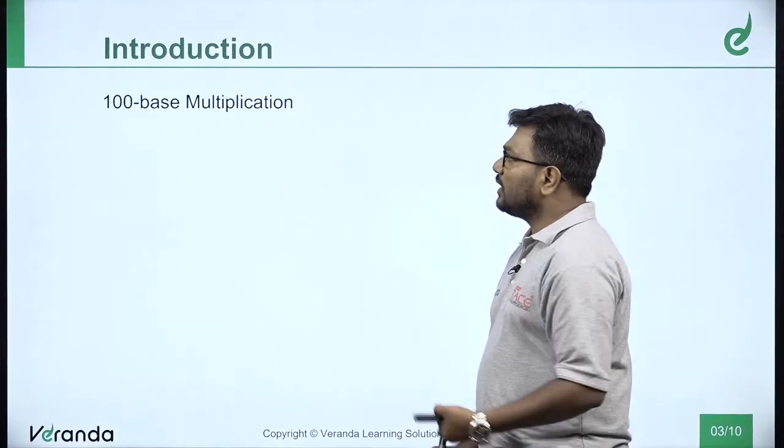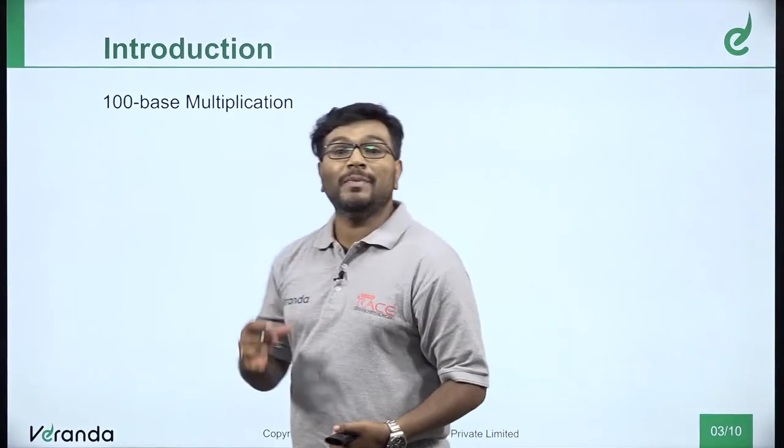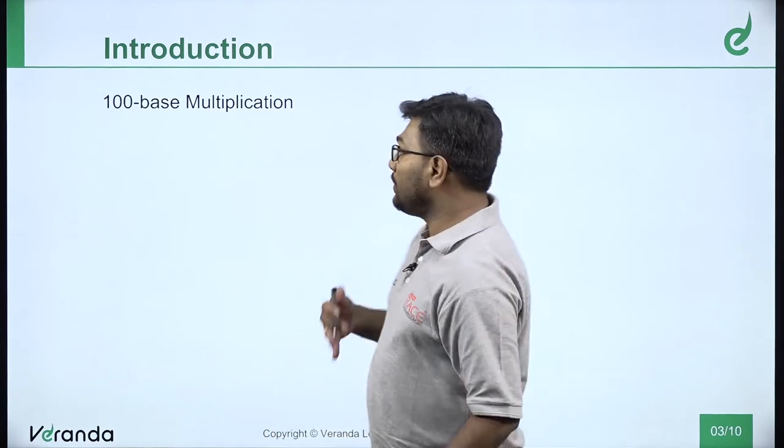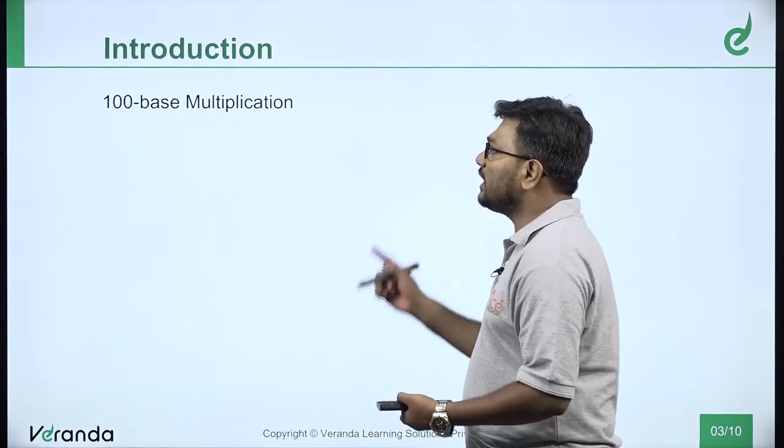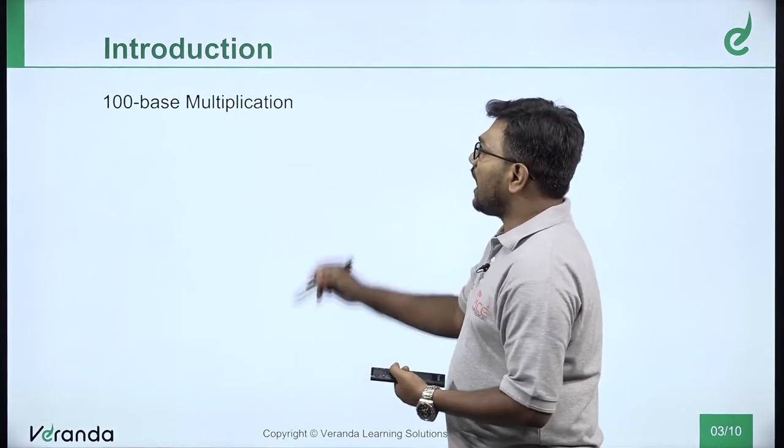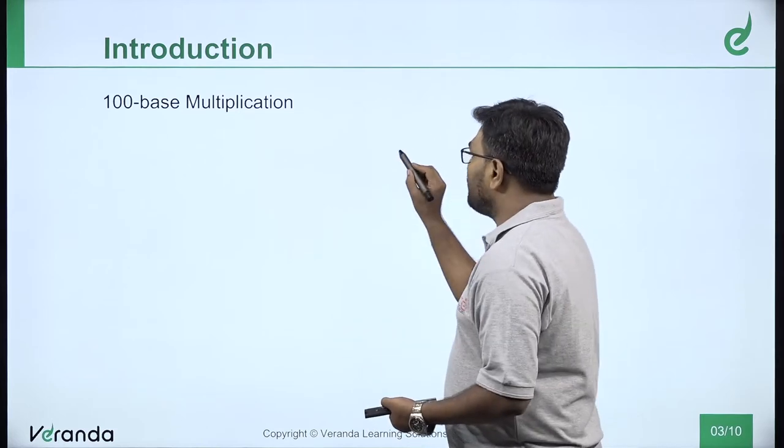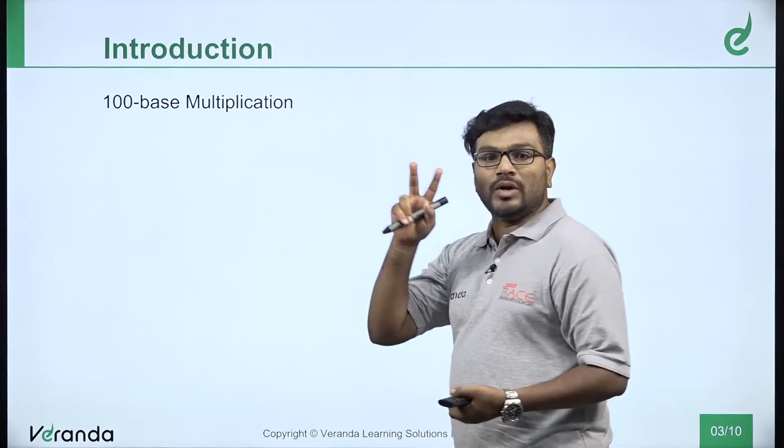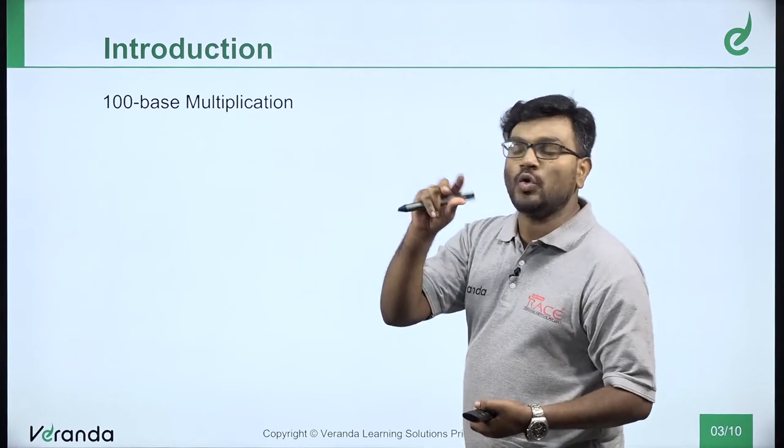Welcome to Veranda Race, Unit 3 Vedic Mathematics. This class is called the base method - multiplication using the base method. First, 100-base multiplication. Two number multiplication nearest to 100.